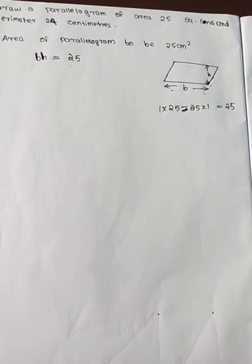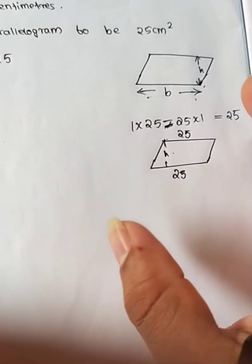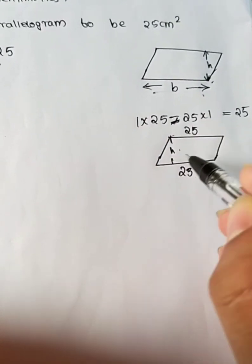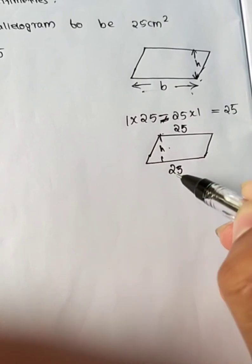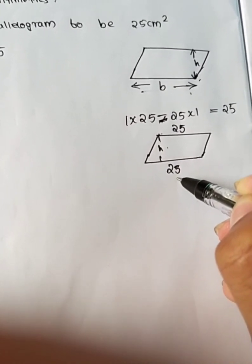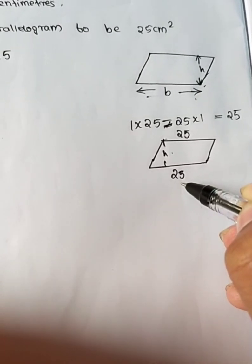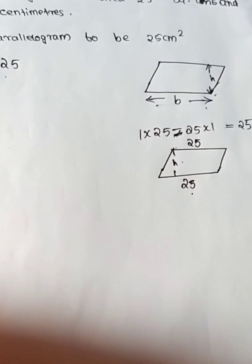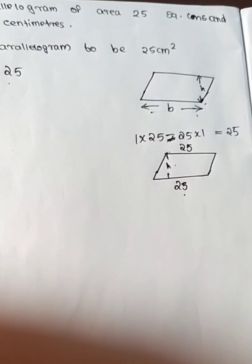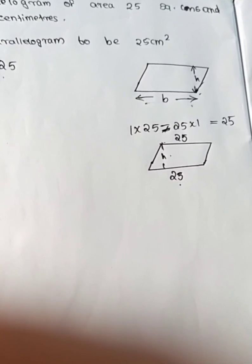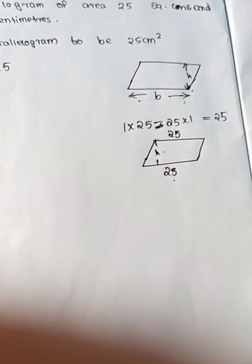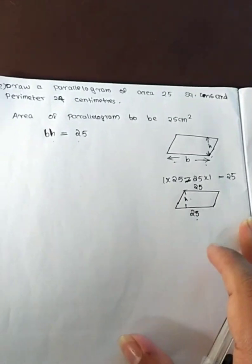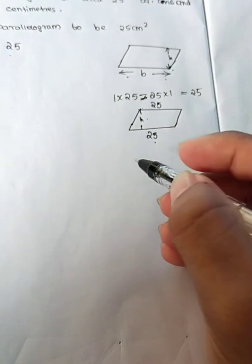The perimeter has 4 sides. So we have the perimeter. The sum of the sides equals 24. In 24, the sides are added together.